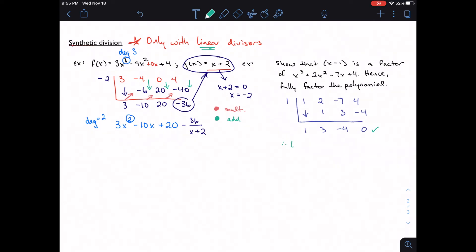So I can say, therefore, x minus one is a factor. And my quotient, just so I know, is x squared plus three x minus four.